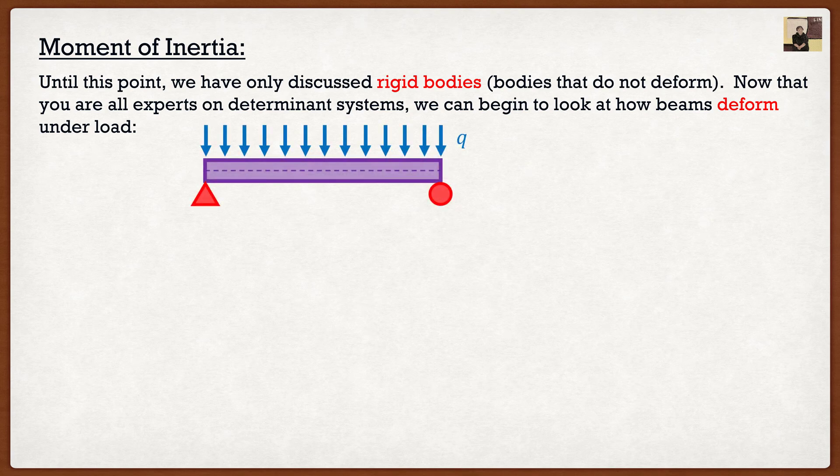Let's say that we have a simply supported beam with a load q. Again, you are now the masters of rigid bodies. So you can find out the support reactions, you can find the shear diagram, you can find the bending moment diagram. So it's only logical that the next step we would take would be actually finding the deflection of this beam.